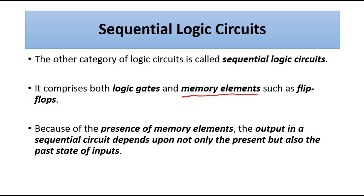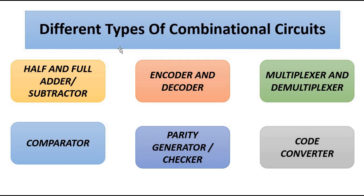The different types of combinational circuits we will cover are: arithmetic circuits — the half and full adder and subtractor — encoder and decoder, multiplexer and demultiplexer, comparator, parity generator and checker, and code converters. We will be discussing them one by one in separate videos in detail.